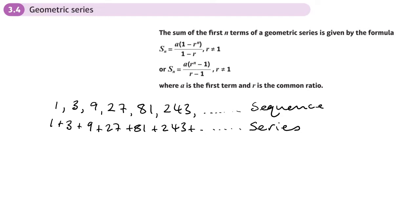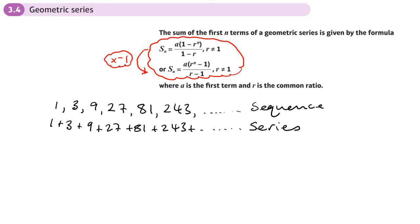Just like the arithmetic series where we have a formula to find the sum, we also have a formula to find the sum of a geometric series. The formula can be written in two different ways — multiplying one by negative one gives the other. They both do the same thing, so you can use either one. I prefer to use the form with that number then take away one, but it makes no difference — they're both equivalent.